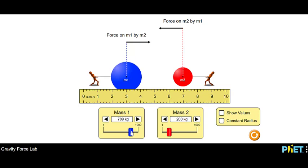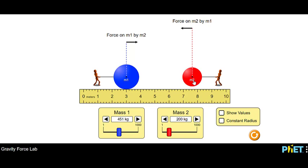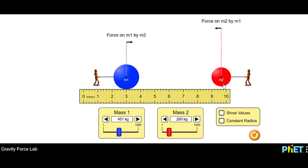So let's take mass 1 back down, how about right here. And what's going to happen if I move m2 away from m1? So if I'm increasing the distance between the centers, what will happen to this force arrow?